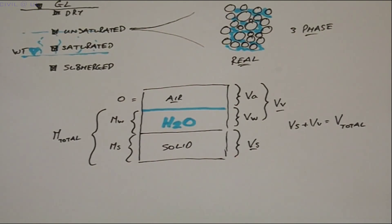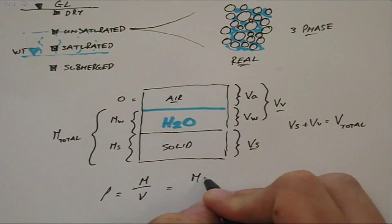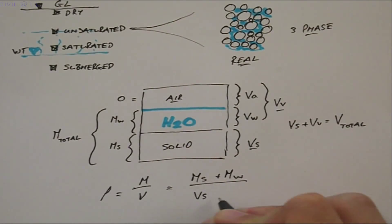And adding this to the volume of solids gives us the total volume. So, starting with the basic definition of density, which is equal to mass over volume, and breaking it into its component parts for the unsaturated soil, we get density is equal to the mass of solids plus the mass of water divided by the volume of solids plus the volume of voids.